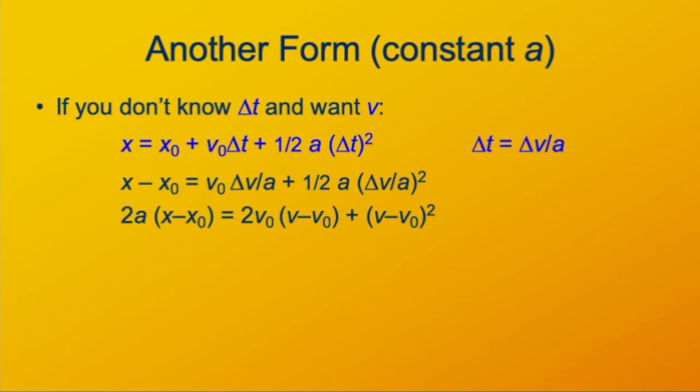Now what I've done is substitute in v minus v₀ for Δv. Now I expand the square term, the binomial square (v - v₀)² becomes v² minus 2vv₀ plus v₀².